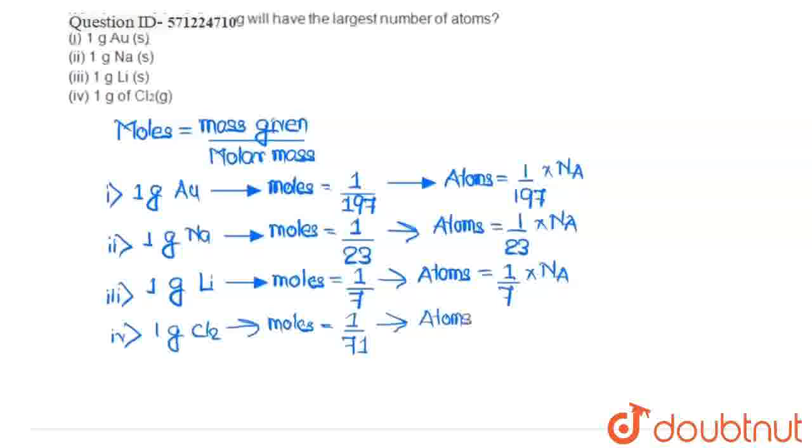So, the number of atoms in this case will be - a chlorine molecule has two chlorine atoms. So, it will be 2 multiplied by the moles, that is 1 by 71, multiplied by the Avogadro number NA. This much atoms of chlorine will be there in 1 gram of chlorine.